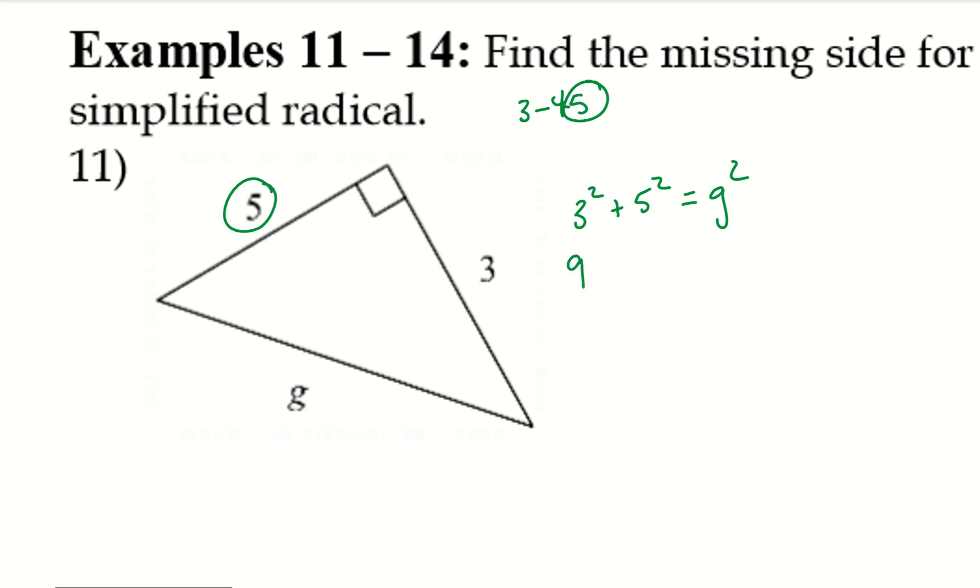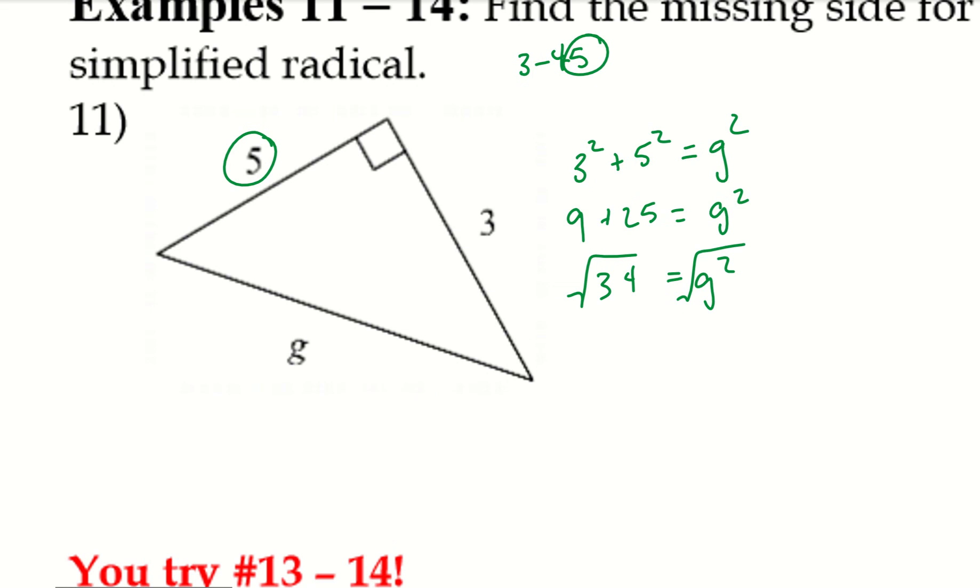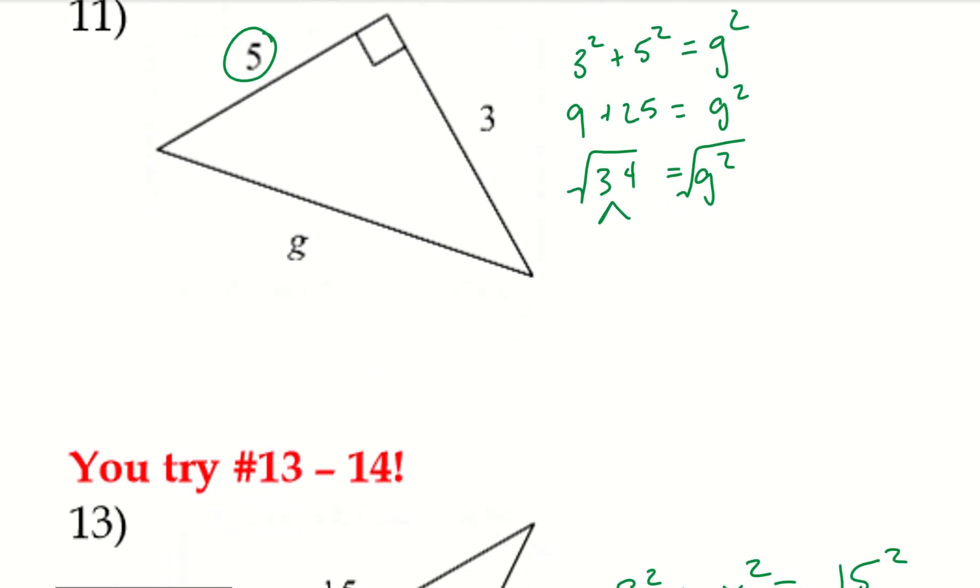So, now I have 9 plus 25 equals g squared. Then, we have 34. 34 is equal to g squared. And then, you take the square root. Alright, so, let's go ahead. 34, I noticed that that's an even number. 2 times 17. Now, I'm at both prime numbers. So, I can't simplify that anymore. Which means g just equals the square root of 34.